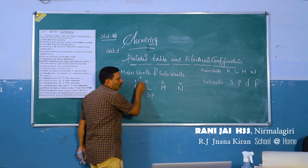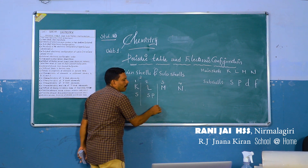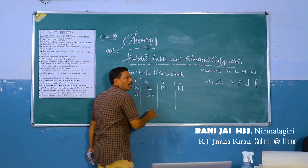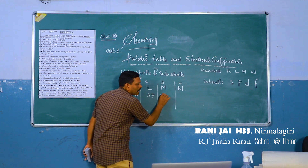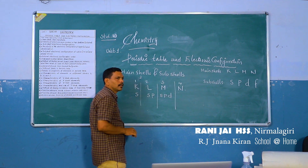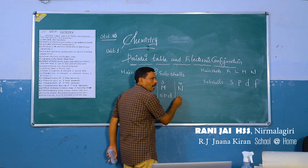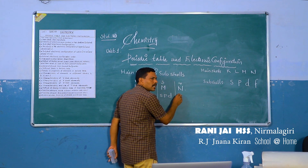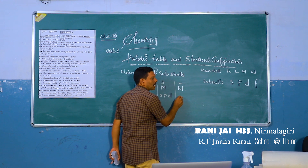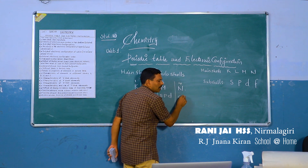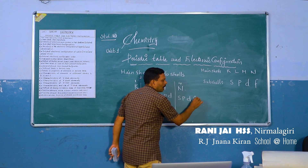K has only one sub-shell, S. L has two sub-shells, S and P. M has three sub-shells — S, P, D. Now children, how many sub-shells does the N main shell have? Four sub-shells: S, P, D, F.